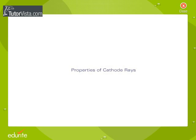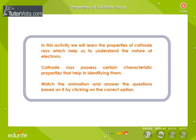Properties of cathode rays. In this activity, we will learn the properties of cathode rays, which help us understand the nature of electrons. Cathode rays possess certain characteristic properties that help in identifying them. Watch the animation and answer the questions based on it by clicking on the correct option.